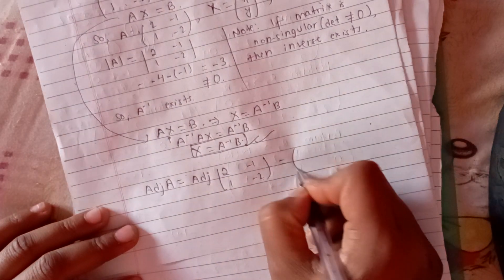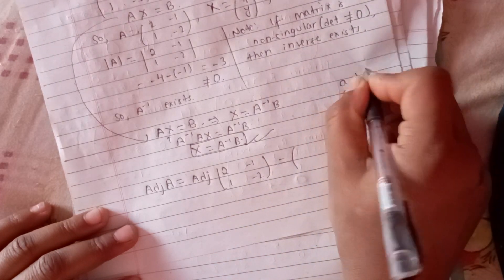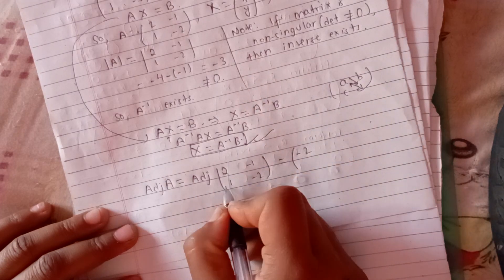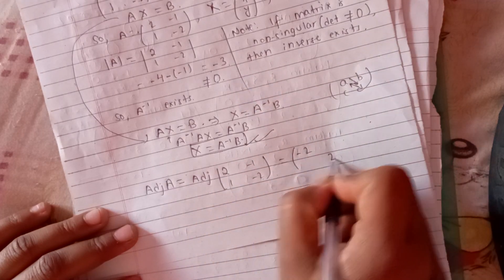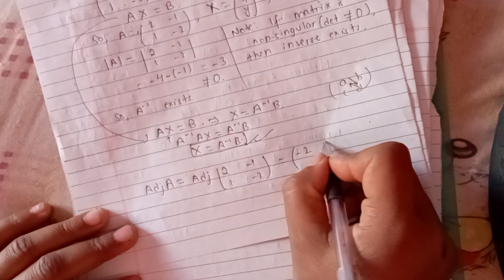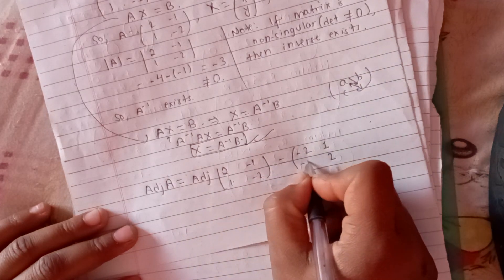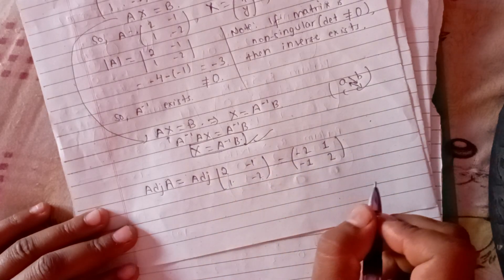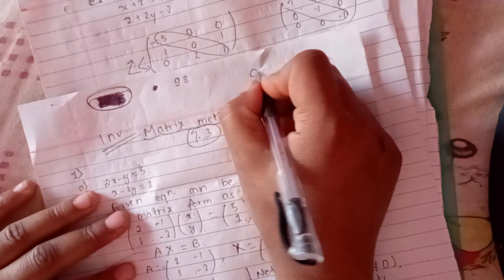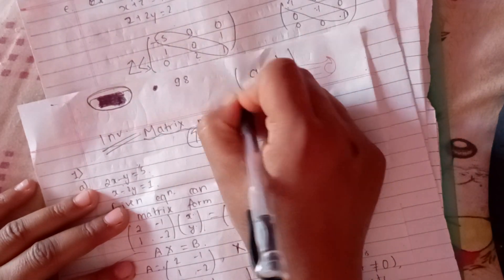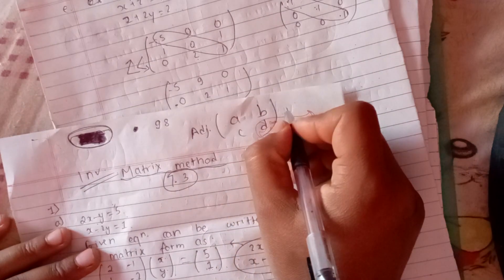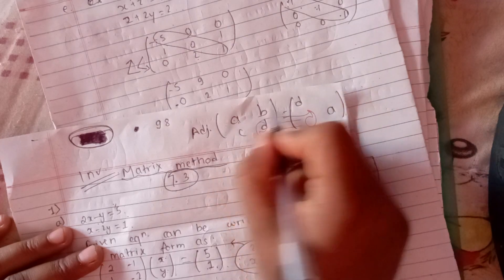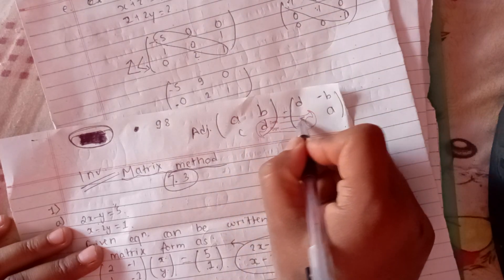In a 2×2 matrix with entries A, B, C, D: we interchange the diagonal elements and change the sign of the off-diagonal elements. So for our matrix, we interchange the diagonal while the off-diagonal signs change.